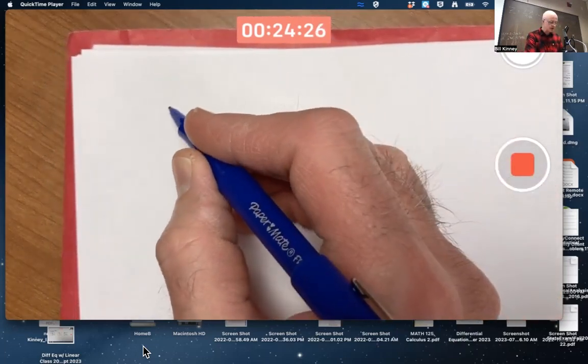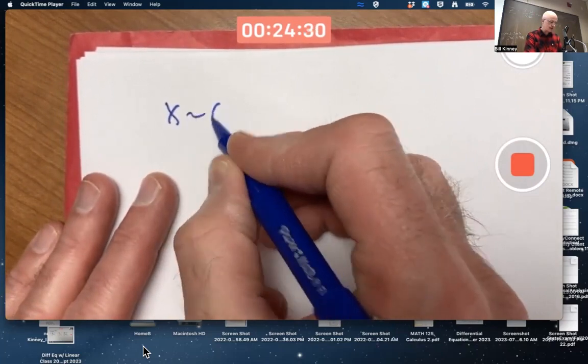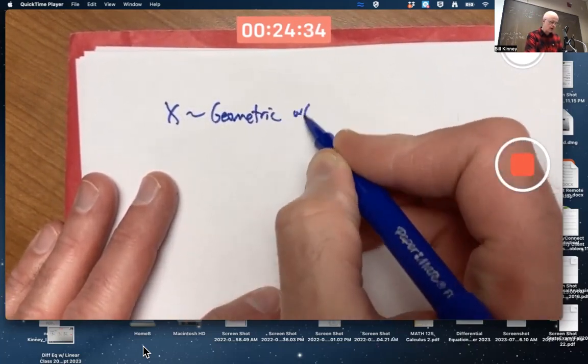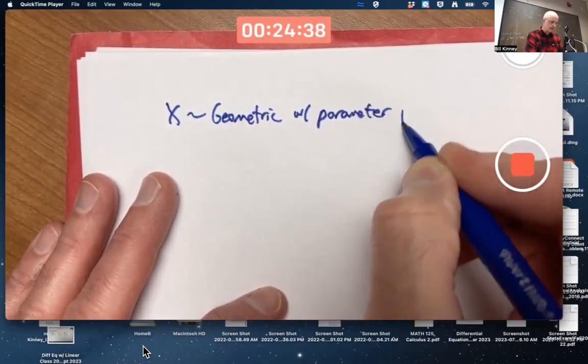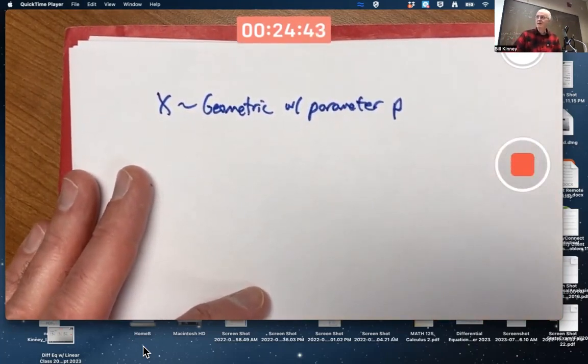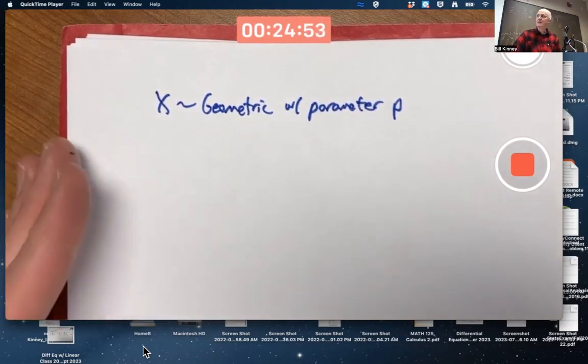We'll start with an example of a geometric random variable. Let's say X is geometric with parameter p. We did binomial last time. You remember that? We did both the method of moments estimator for p and the maximum likelihood estimator for p for a binomial distribution. But now we're talking about a geometric.